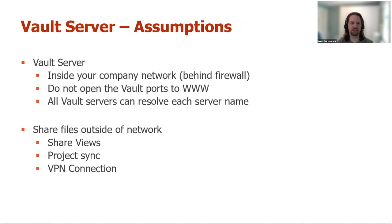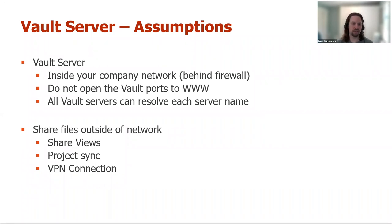A few assumptions to establish: the Vault server is designed to be inside your company firewall with no open ports to the world — accessible only through your local network or VPN. All Vault servers should be able to resolve each other's hostnames, which helps with file replication. We're not covering external access today, but shared views, project sync, and VPN connections are three ways to do that.